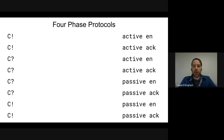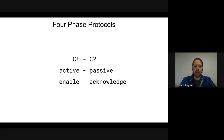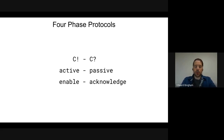We can abstract all of this away. We have three different design decisions that allow us to choose between these eight protocols: send and receive, active and passive, and enable and acknowledge. Send vs. receive is the direction of token flow; active and passive determines who starts the communication action — the sender or the receiver; and enable or acknowledge determines the sense of the acknowledgement signal coming back from the receiver.